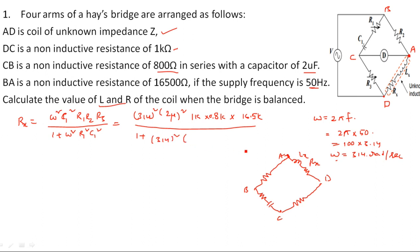And 16.5 kilo divided by 1 plus 314 squared, R1. Where is R1 here? Here. Capacitance series resistance is nothing but R1. So 800 ohms squared times, what is C1? 2 micro squared. So if you simplify this, you will get the answer. Rx is equal to, what is the value of Rx? 4.18 kilo ohms. Simplify and check whether I am correct or not.